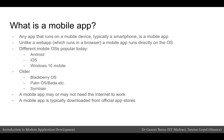Popular mobile operating systems today are Android, iOS, and Windows 10. Some older mobile operating systems that used to exist are Blackberry OS, Palm OS, Bada, and Symbian for Nokia.